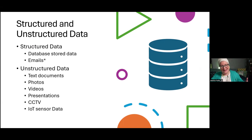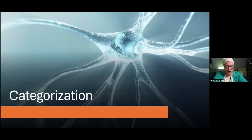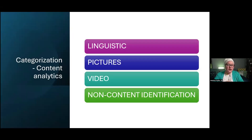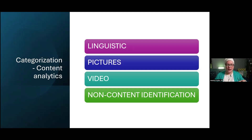AI is not just about determining what's responsive or not. It really helps examiners in terms of categorization. Categorization uses content analytics on a variety of different types of content — this could be linguistic content, pictures, video, and also non-content identification, meaning looking at metadata as opposed to the actual data.